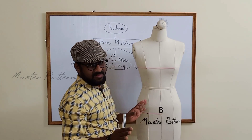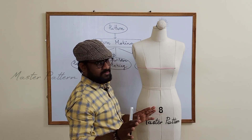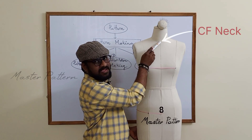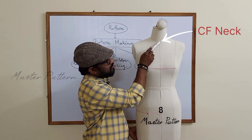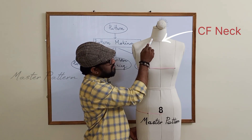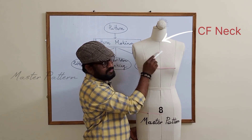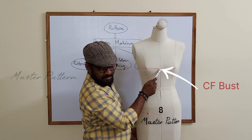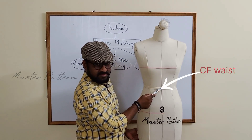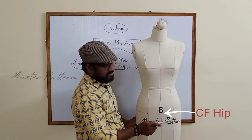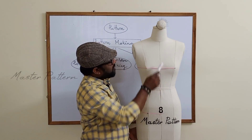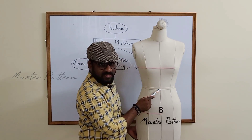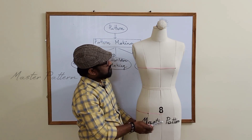Where the neck and center line intersect is called the center front neckline. Using the same logic: center front bust line, center front waist, and center front hip. Very simple — you use the words 'center front' combined with the level name: center front neck, center front bust, center front waist, center front hip.